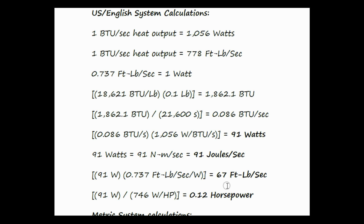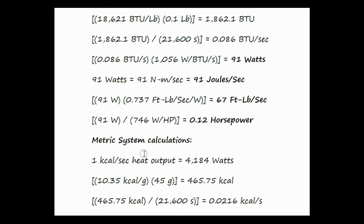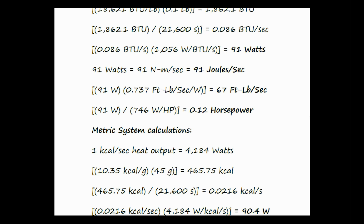This is the power output by the flame at 100% thermal efficiency, burning in open air. Now repeating the calculation in the metric system: 1 kcal per second heat output is equal to 4,184 watts. 10.35 kcal per gram times 45 grams equals a potential energy of 465.75 kcal. Dividing 465.75 kcal by 21,600 seconds burn time equals 0.0216 kcal per second heat output by the candle flame.